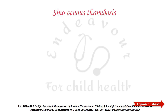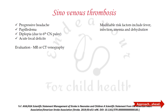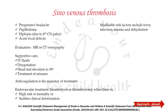Cerebral sinovenous thrombosis is the venous type of stroke. It presents as progressive headache, papilledema, diplopia, and acute focal deficits. Modifiable risk factors include fever, infection, anemia, and dehydration. Evaluation is by MR venography or CT venography for definitive diagnosis. Supportive care includes IV fluids, oxygenation, head-end elevation to 30 degrees, and treatment of seizures. Anticoagulation is the mainstay of treatment. Endovascular thrombolysis or thrombectomy is done only when there is very high risk of mortality or sudden clinical deterioration.